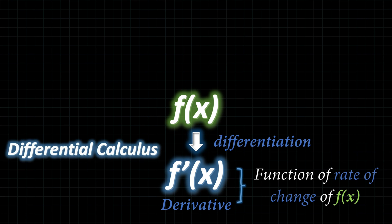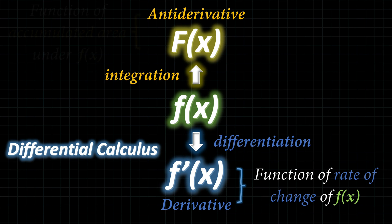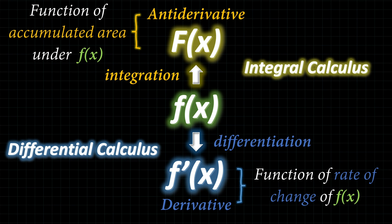This is essentially differential calculus. Starting at the original f(x) again — this time, if we integrate it, we would get capital F(x), also known as the anti-derivative. The anti-derivative is a function that helps us find the accumulated area underneath our original function f(x), and this would be a part of integral calculus.